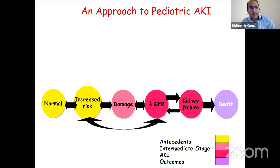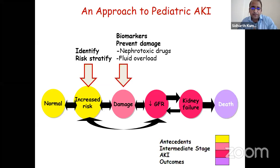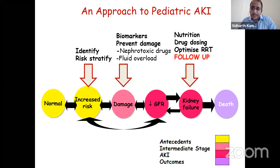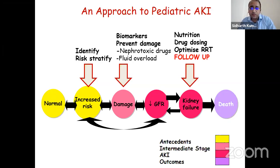To summarize: when managing a child with AKI, it's important to identify risk and do risk stratification. Biomarkers may be used in select groups. Prevent nephrotoxins, avoid fluid overload, optimize nutrition—especially if on dialysis—and ensure renal dose drug modification. Optimize RRT based on severity; if very sick, start RRT early. Most importantly, follow these children regularly for complications including CKD, proteinuria, and hypertension. Thank you to the SSN for inviting me.